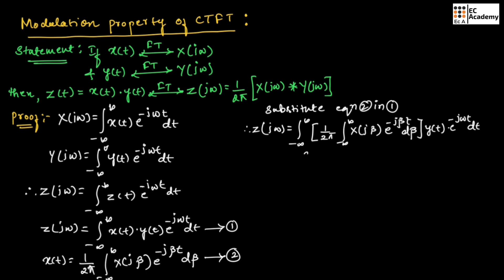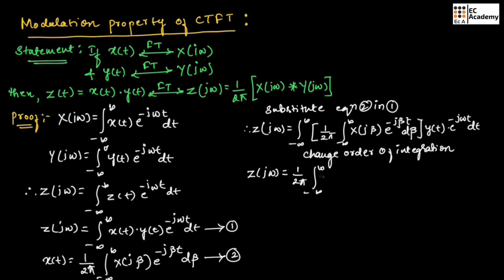Now, let us change the order of integration. If we change the order of integration, we can write Z(jω) is equal to 1 by 2π integration of minus infinity to infinity. First, let us write X(jβ), then let us write the integration minus infinity to infinity Y(t) exponential to the power of j(ω minus β)t dt, into dβ.